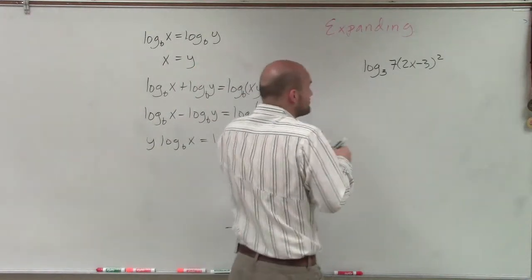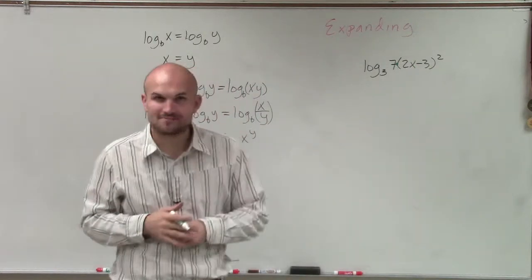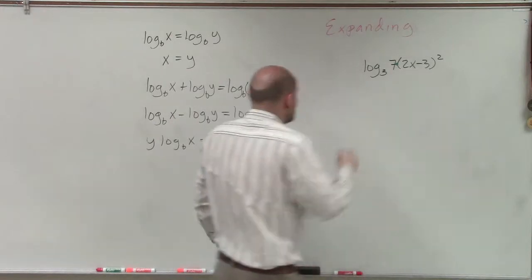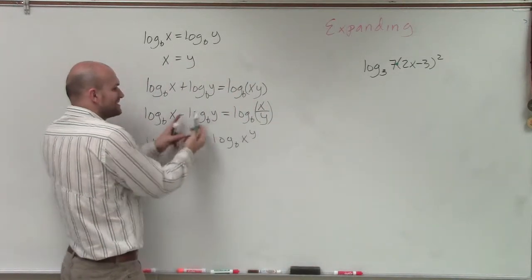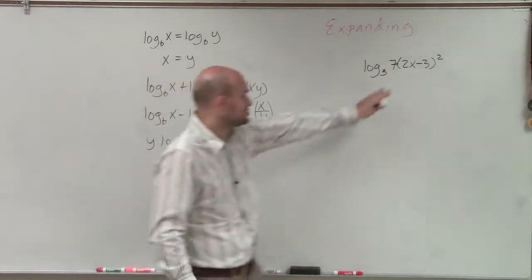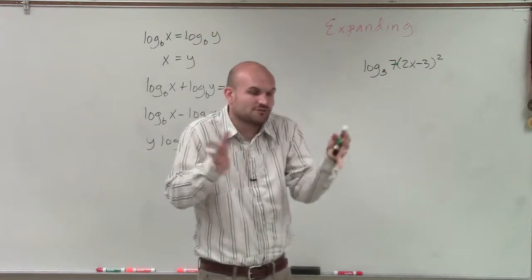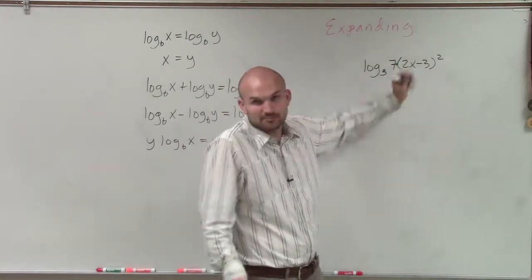So here you can see the only product that I have is 7 times 2x minus 3 squared. I understand that I'm subtracting these, but that does not tell me to use this property because it's not a logarithm subtracting another logarithm. This is just a subtraction of two terms. It's not a subtraction of two logarithms. So we can't apply any properties of logarithms within the parentheses.